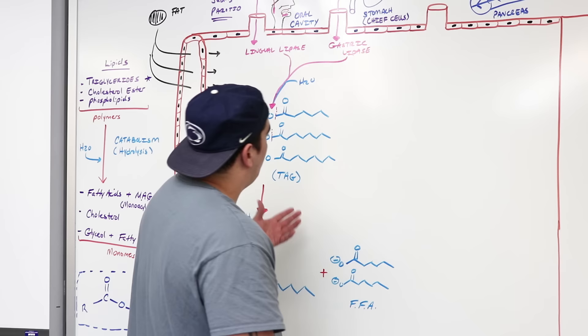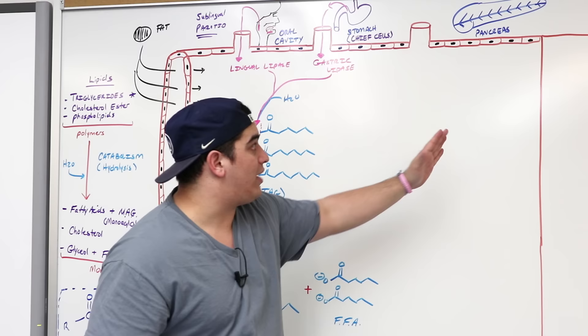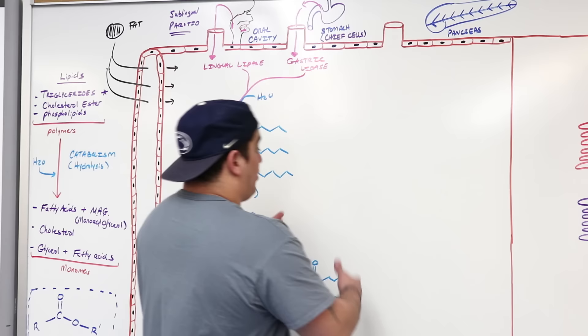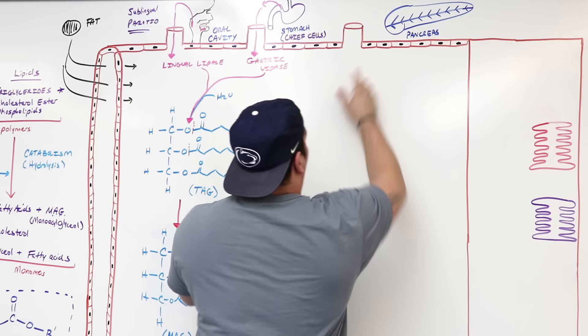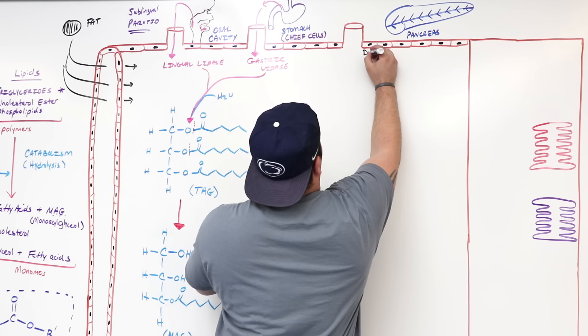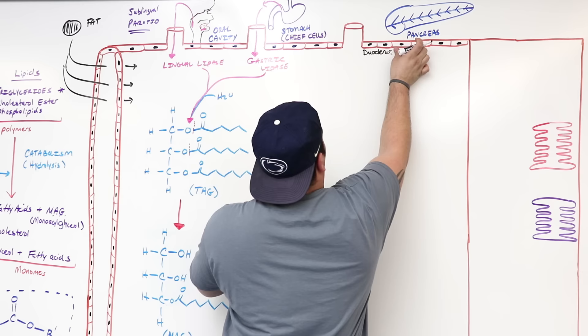In reality, it's not going to break down a large amount of these triglycerides. A lot of them are going to continue down the gut tube until we get to the small intestine. So now let's go to the small intestine. We already talked about the stomach and the oral cavity structures — now we're going to get to the duodenum.